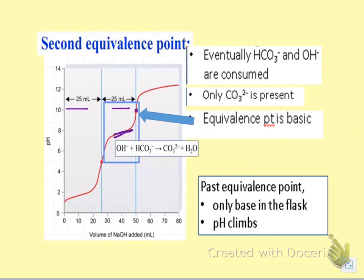This time it's going to be basic because carbonate ion is what I have in there. So the equivalence point is going to be basic. And once I'm past that equivalence point, all I'm doing is adding more hydroxide. I've got none of these acids left, and my pH becomes quite basic.